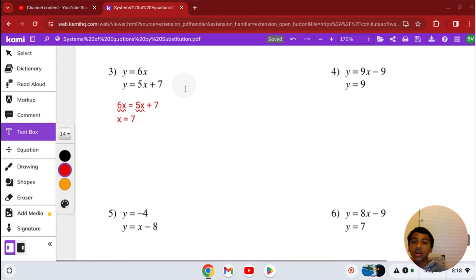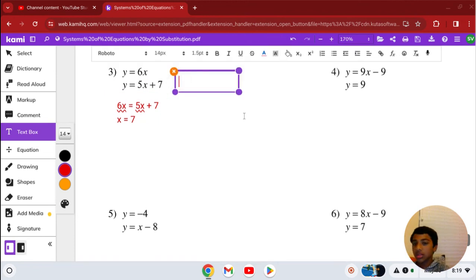But now we have to find y. Since x equals 7, you can plug x in for y. So y equals 6 times 7. So the solution is 7 comma 42.